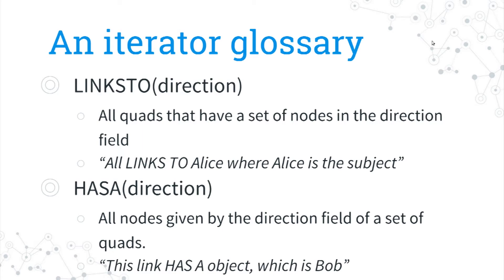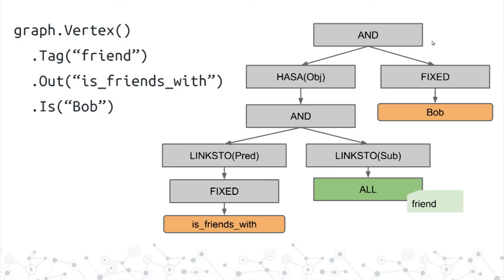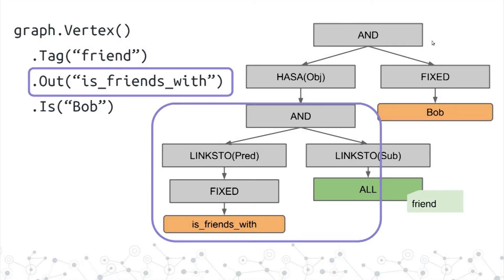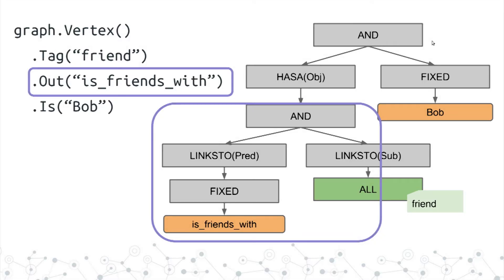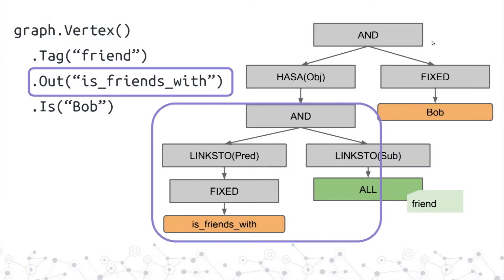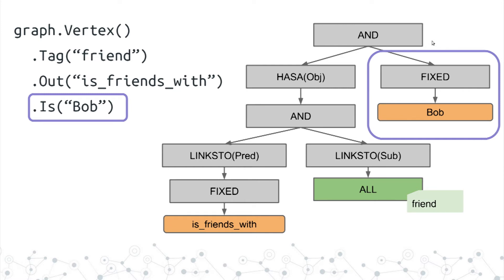Back to the example: we have the All iterator, I asked for starting with everything, tagged with friend. Follow the relationship isFriendsWith out — find all the links, get all the links that have that relationship type, intersect them to find those relationships for those people, and then go back down the HasA. IsFriendsWith is a fixed iterator because I told you what it is. And we might want to make sure at the very end that it's intersected with a set of Bob. We know this set will evaluate to some huge set of people — all of Alice's friends, all of Dave's friends — and then Bob is our target.